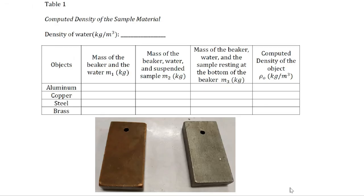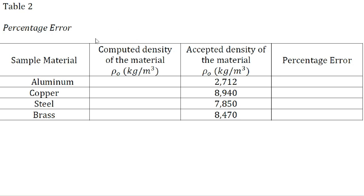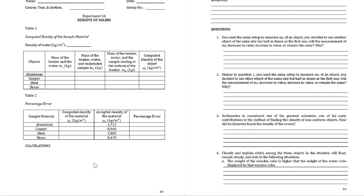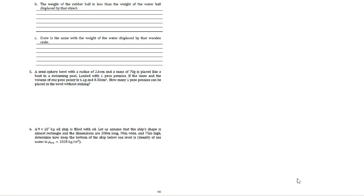For this experiment, complete Table A. The density of water is 1000 kg/m³. Also, complete Table 2, and answer the analysis questions found on pages 89 and 90.